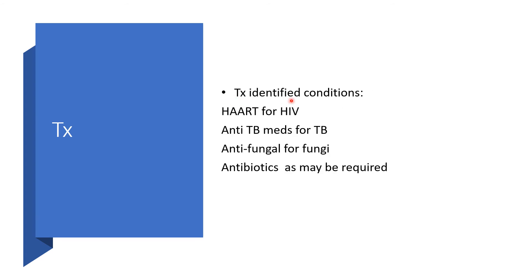If an infectious condition has been identified, treat it appropriately. For example, highly active antiretroviral therapy for HIV; anti-tubercular medications for tuberculosis — pyrazinamide, ethambutol, isoniazid, rifampicin, and pyridoxine to help with INH side effects. Use antifungal agents for fungal infections, and antibiotics empirically or based on microscopy, culture, and sensitivity reports.